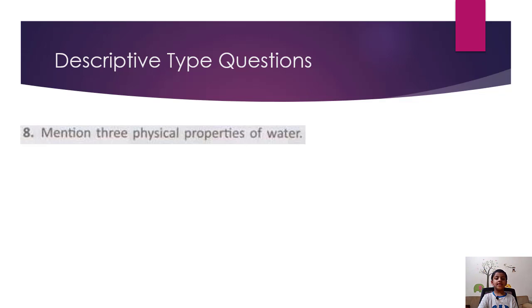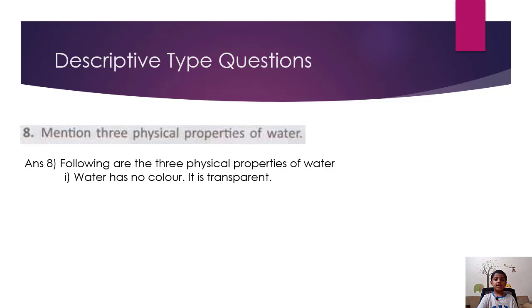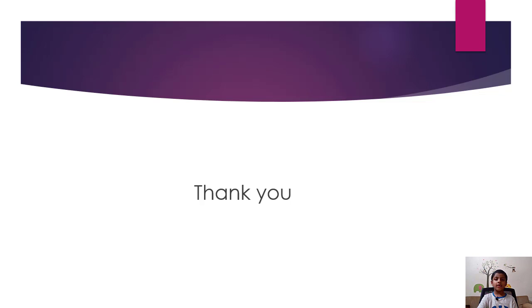Name three physical properties of water. Following are three physical properties of water: Water has no color, it is transparent. Water is odorless and tasteless. Water flows from one place to another. Thank you.